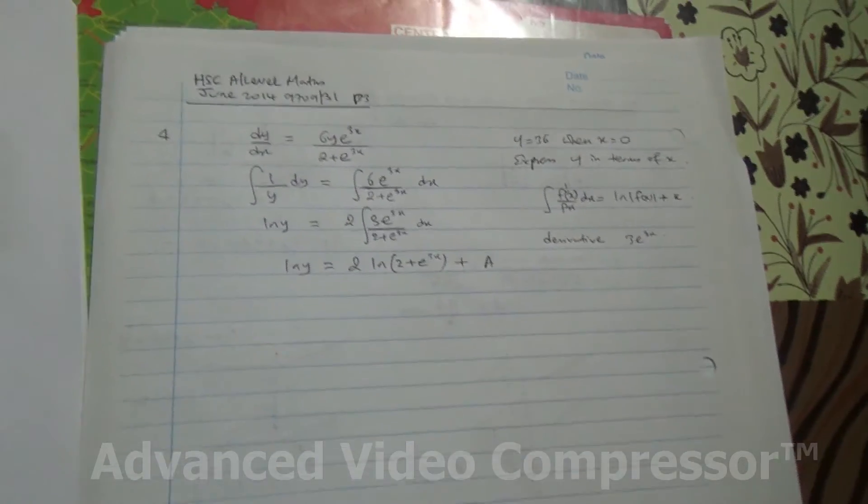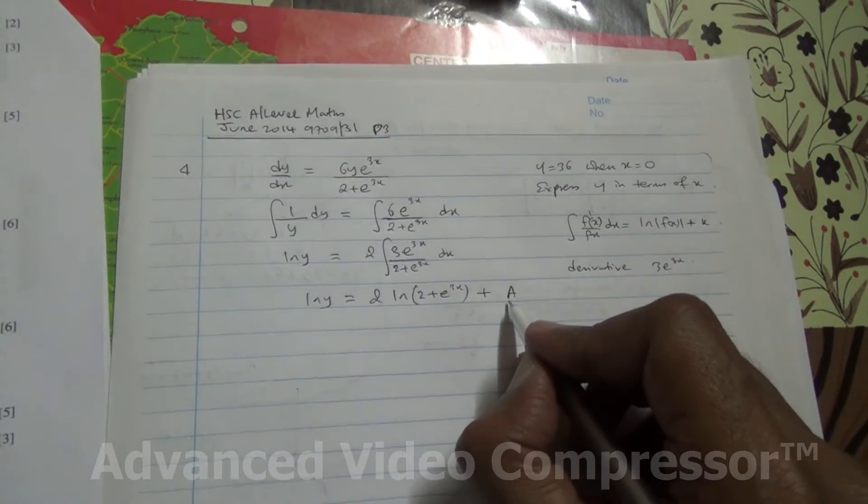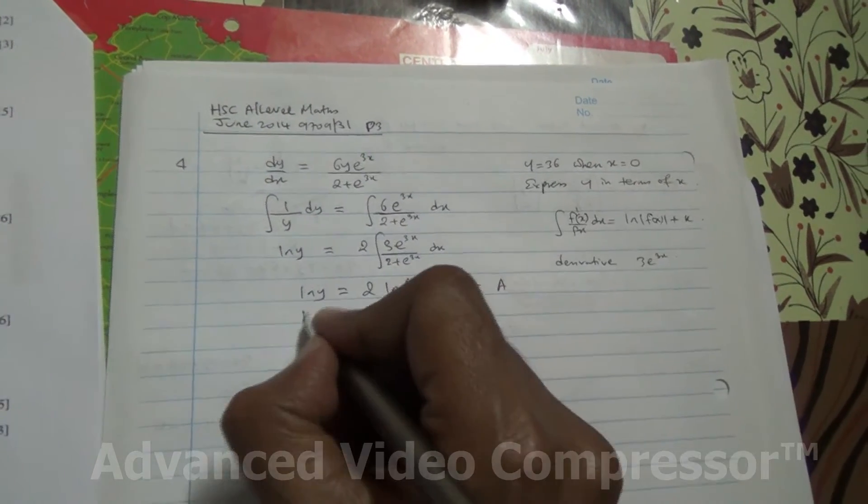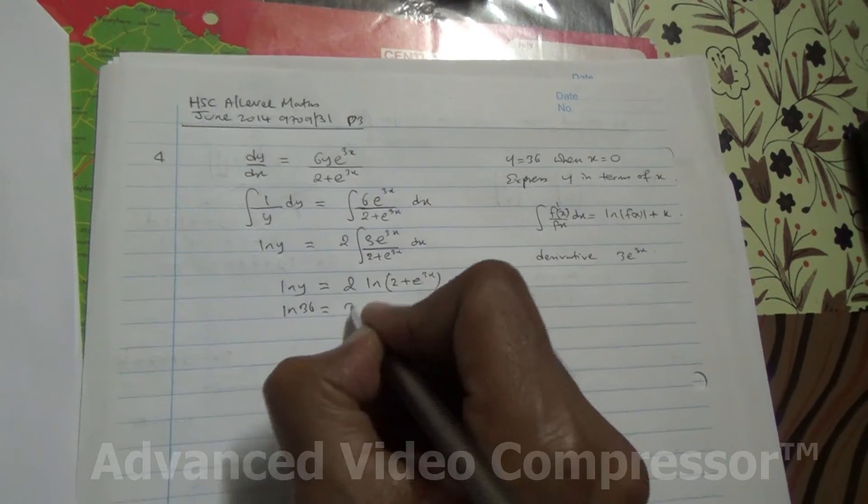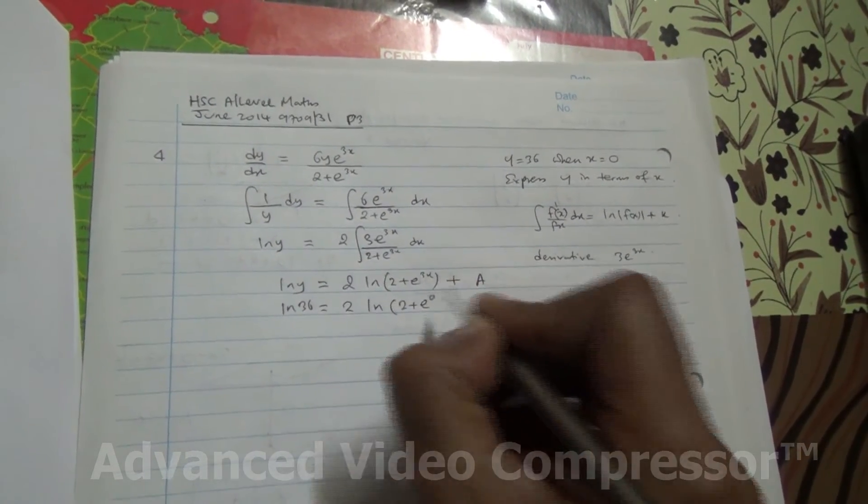That's the differential equation, you need to bring the constant in perspective. And from here, maybe we need to find a, so that's going to be quite nice. So, we've got y is equal to 36, so we've got ln 36 is equal to 2 ln 2 plus e to the 3x, e to the power of 0,